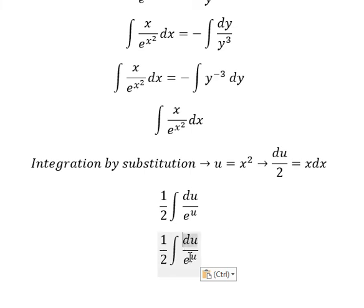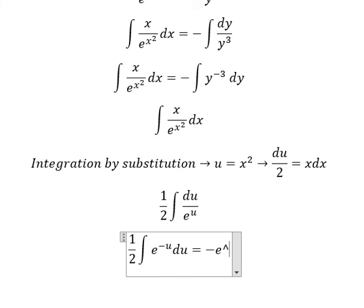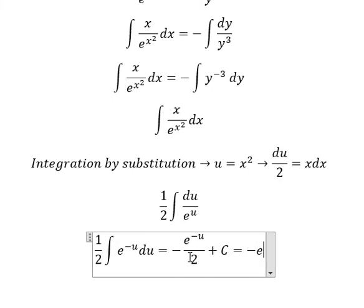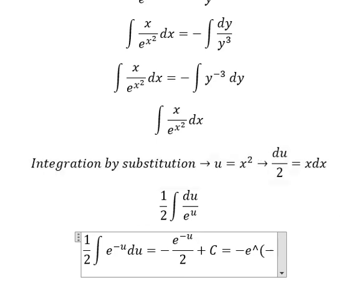This one we have e to the power of negative u du, and we have negative e to the power of negative u over 2 plus c. About u, that's x squared.